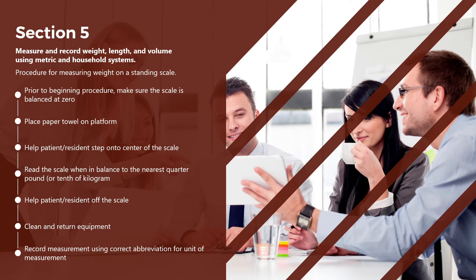Section 5: Measure and record weight, length, and volume using metric and household systems. Procedure for measuring weight on a standing scale: Prior to beginning, make sure the scale is balanced at zero. Place a paper towel on the platform. Help the patient or resident to step onto the center of the scale. Read the scale when in balance to the nearest quarter pound or tenth of a kilogram. Help the patient or resident off the scale. Clean and return the equipment. Record measurement using the correct abbreviation for the unit of measurement.